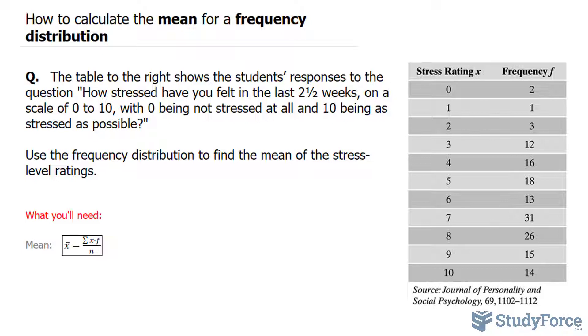Let's take a look at this chart and understand what it's telling us. Two people out of the total surveyed said they had a stress level of 0. In this row, we're told that 13 people had a stress level of 6.